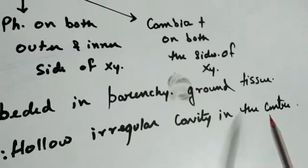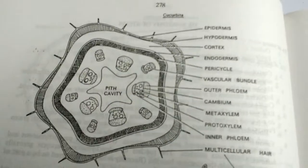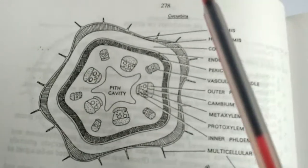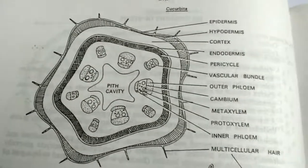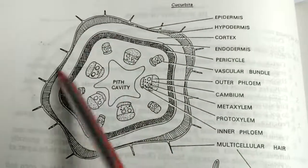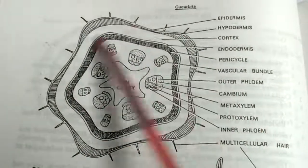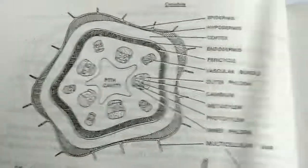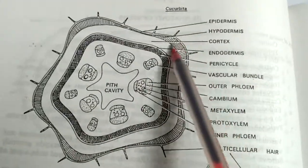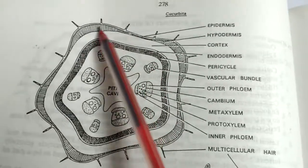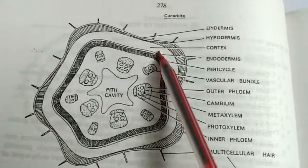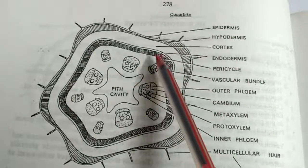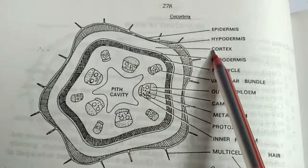This is the diagrammatic representation of cucurbita stem. As you can see, the structures or the outlines here are very very wavy, as I have already told you. Then here comes the epidermis, basically, then the hypodermis outermost layer of cortex, general cortex the middle, general cortex and inner endodermis.